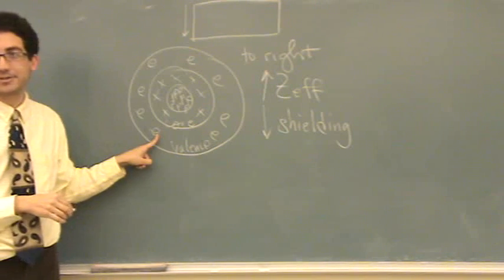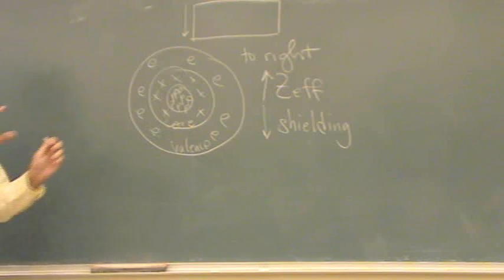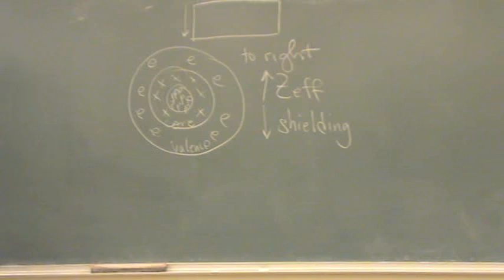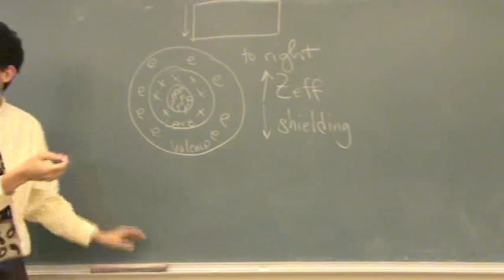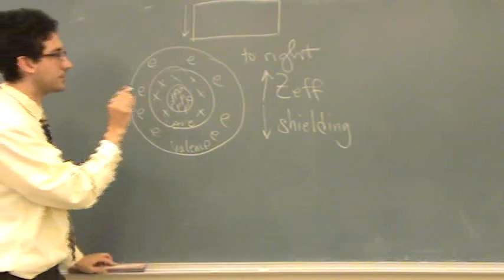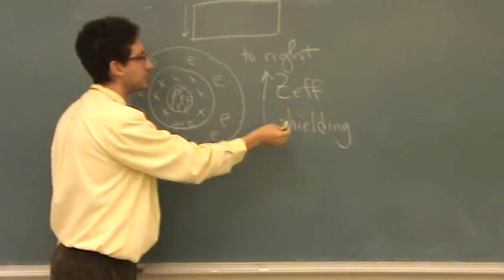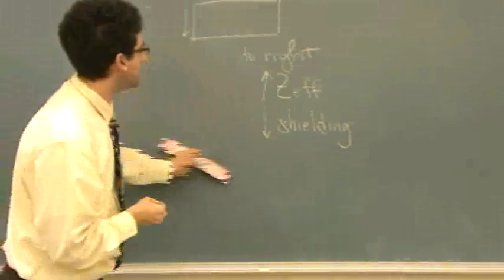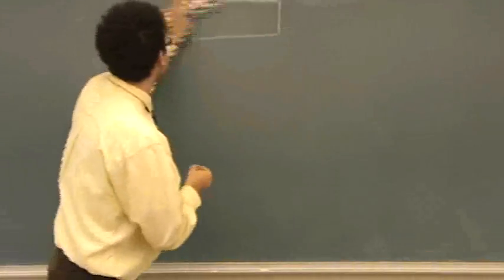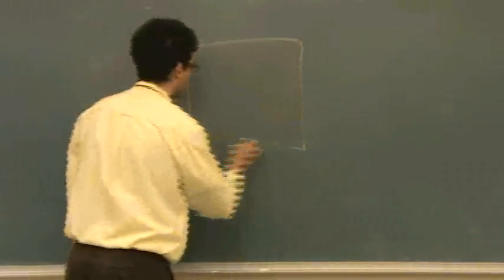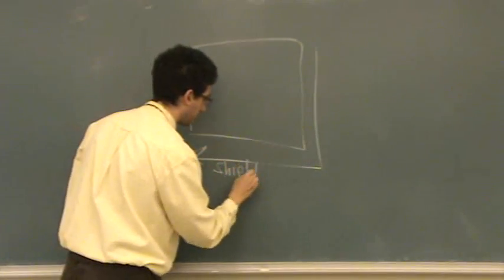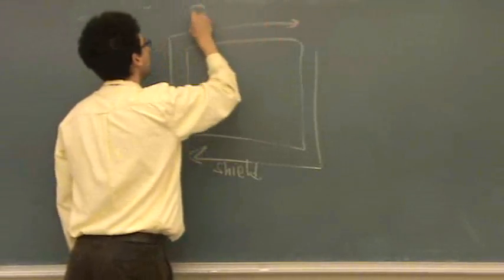So that's how that works. To the right, it increases and this decreases, and vice versa to the left, the opposite is true. So where we got all those trends. Now, if you understand that, then where all the trends come from on your periodic table. Shielding goes this way. Z-effective goes this way.